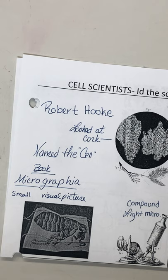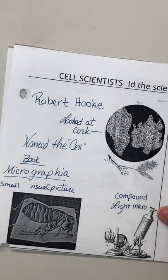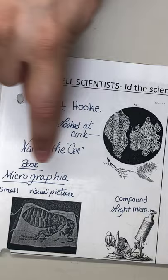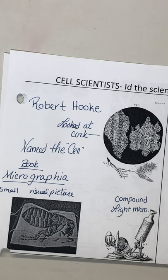Robert Hooke looked at cork and named those little spots 'cells' because they reminded him of the monastery cell. He was one of the first to use a compound light microscope — with a lens at the top and a lens at the bottom, so multiple lenses. He was part of the Royal Society of London — the wealthy scientists — and he created a book called Micrographia, small visible pictures that anyone could pick up and look at things they couldn't see with the naked eye.